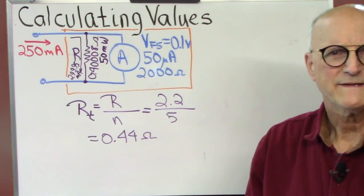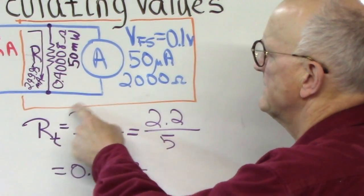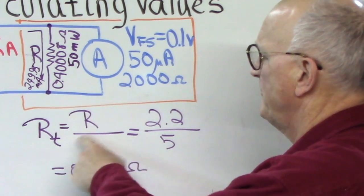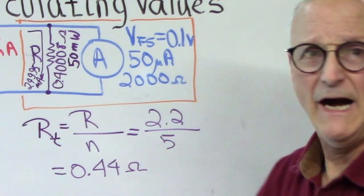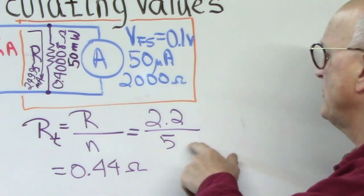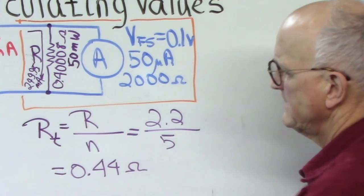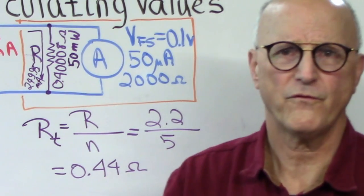Well for identical resistors in parallel, the total resistance is the resistance of a particular resistor divided by the number that you have. So I have my 2.2 ohm resistors. I wanted to do 5 in parallel. That gives me a resistance of 0.44 ohms.